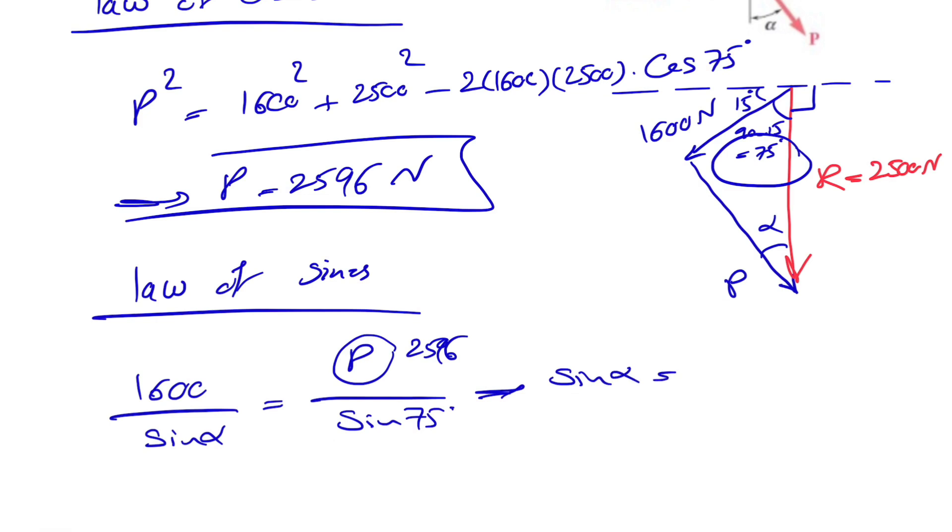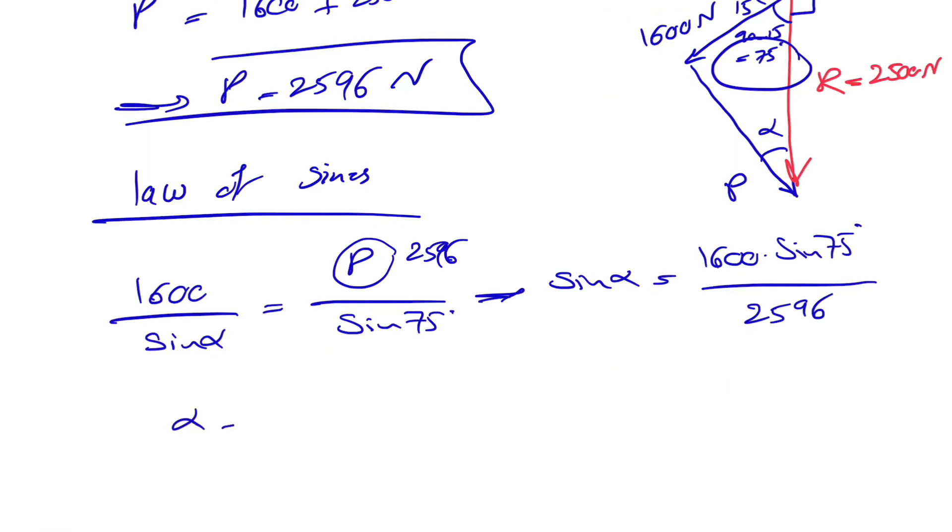From here we can find sine of alpha, which will be 1600 times sine of 75 degrees divided by 2596. And alpha will be sine inverse of 1600 times sine of 75 divided by 2596. If we calculate this amount with the calculator, we can find that alpha is 36.5 degrees.